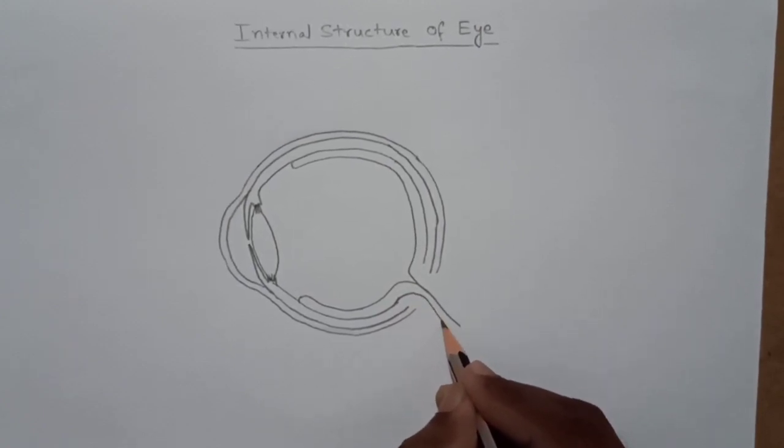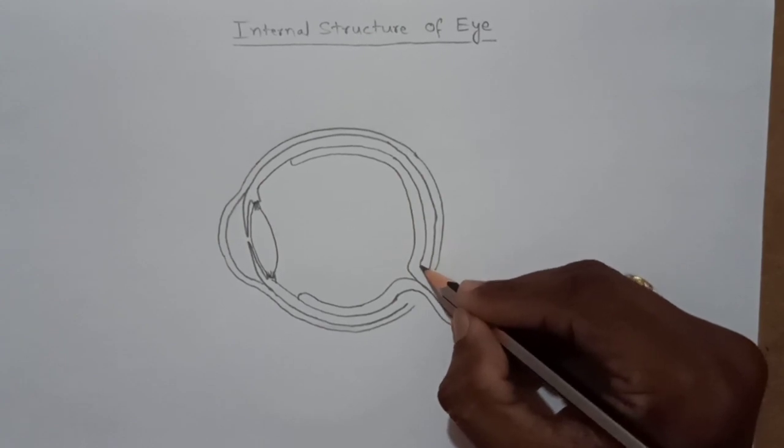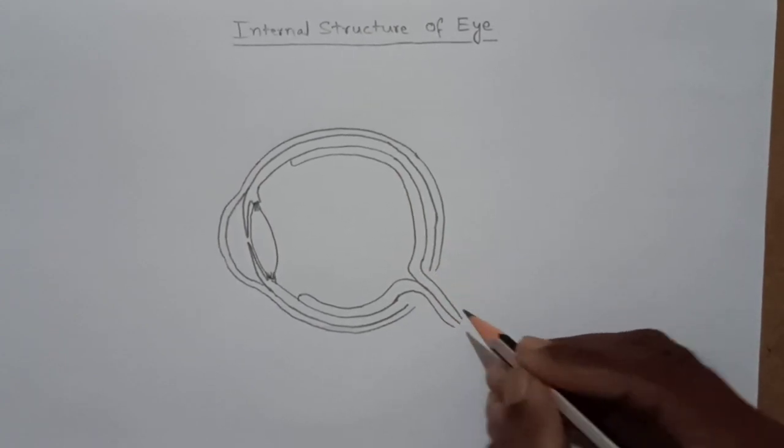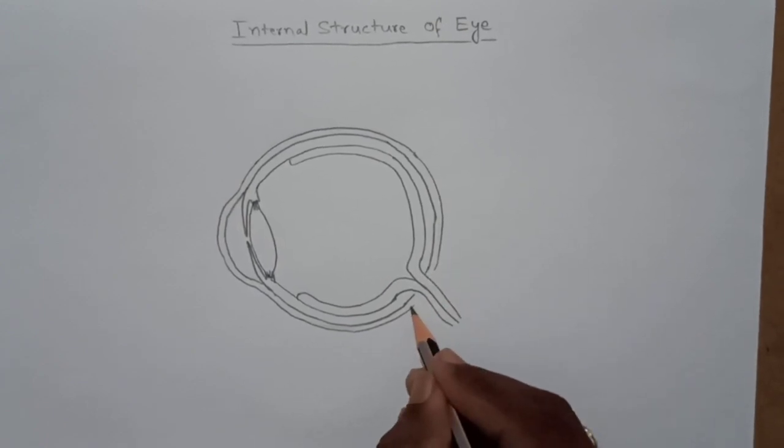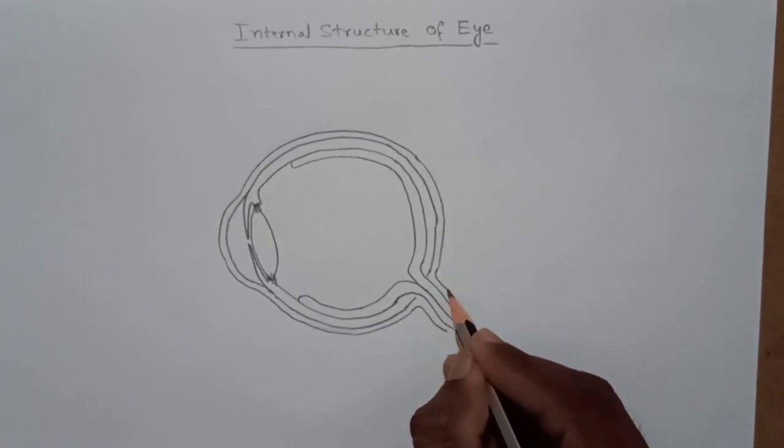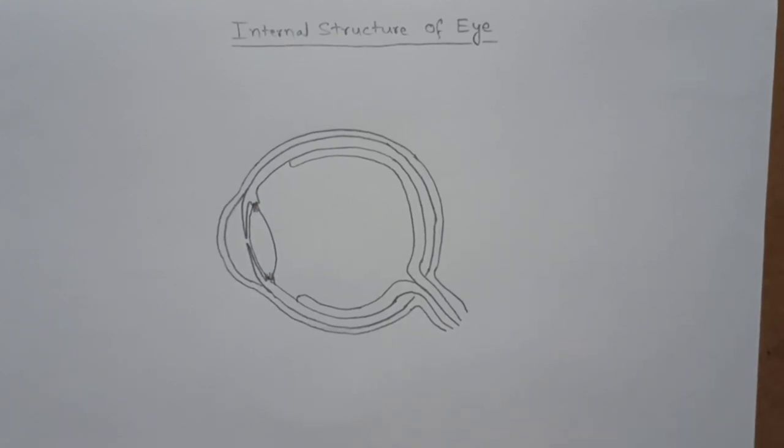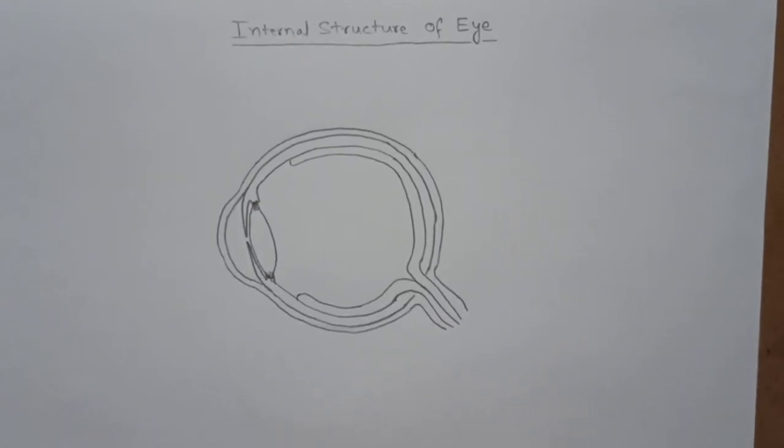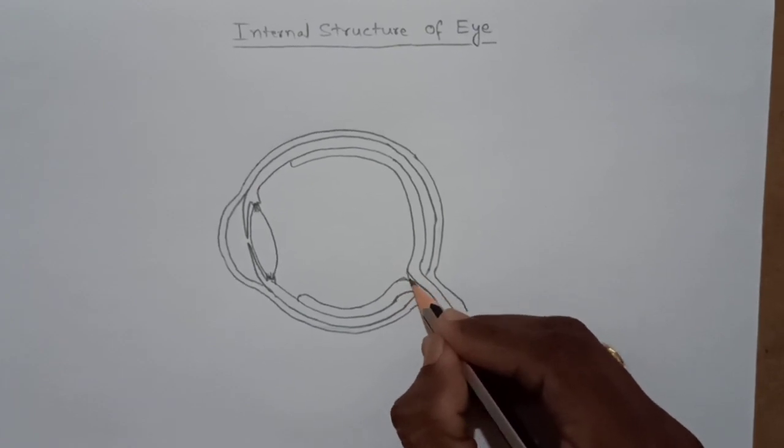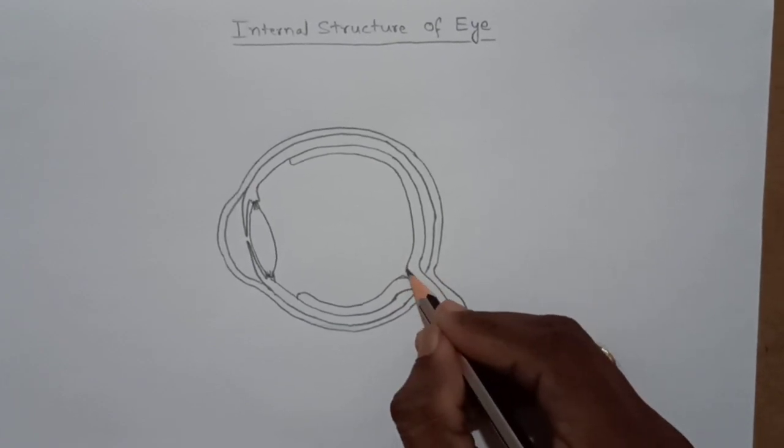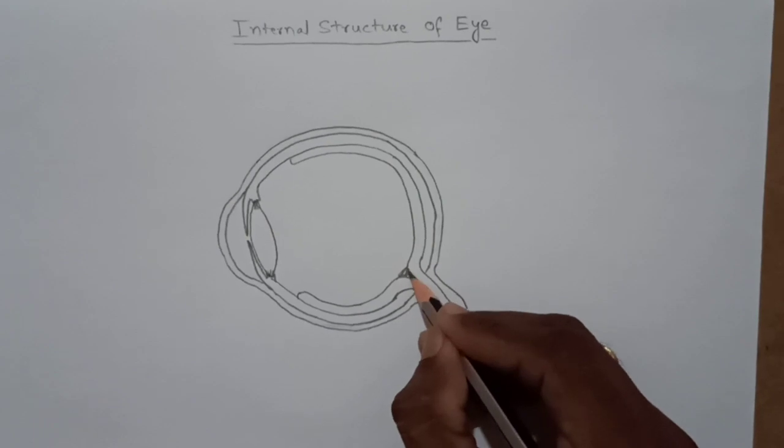And it forms as optic nerve, like this. And here where the optic nerve arises, there will be no rods or cones.